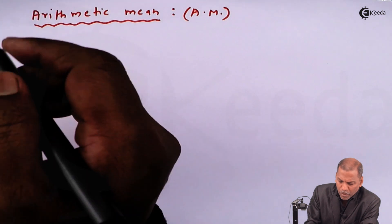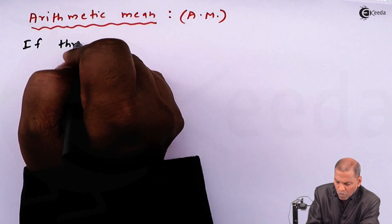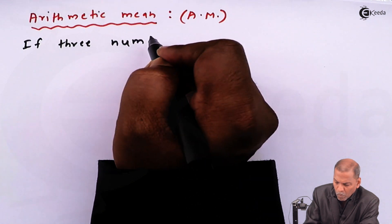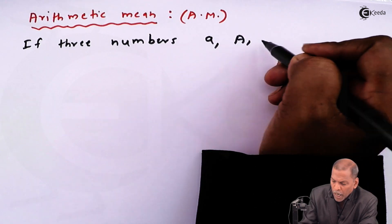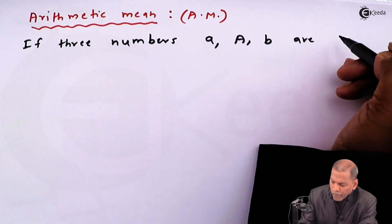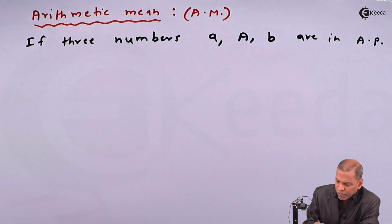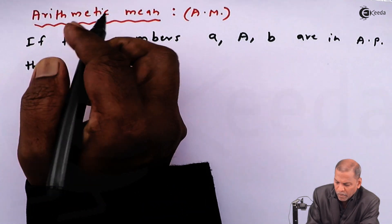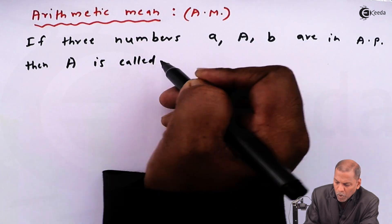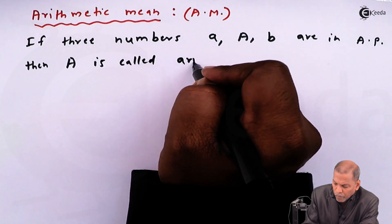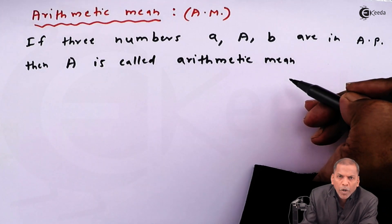If three numbers small a, capital A, and small b are in AP, that is arithmetic progression, then capital A is called arithmetic mean of two numbers a and b.